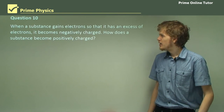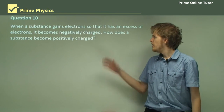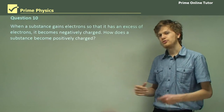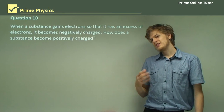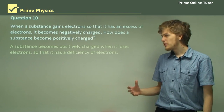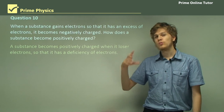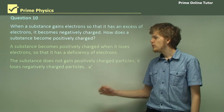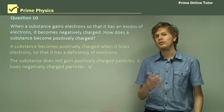Question 10: When a substance gains electrons so that it has an excess of electrons, it becomes negatively charged. How does a substance become positively charged? At first it's tempting to say it must gain an excess number of protons, but this isn't true. Instead, a substance becomes positively charged when it loses electrons, so that it has a deficiency of electrons — meaning more protons than electrons. We do not gain positively charged particles; we simply lose negatively charged particles. When you subtract a negative, you end up with a positive charge.